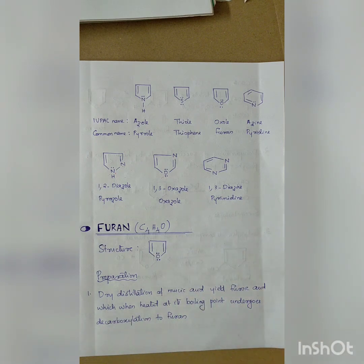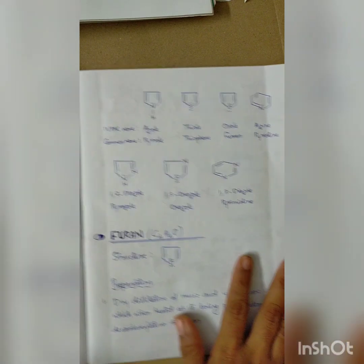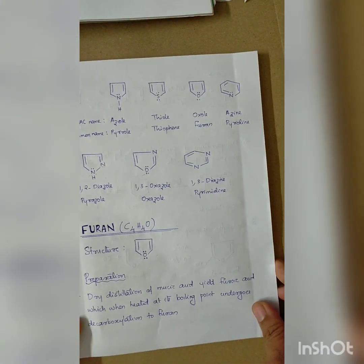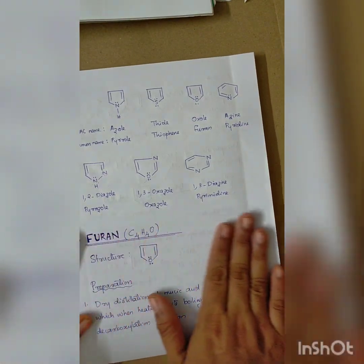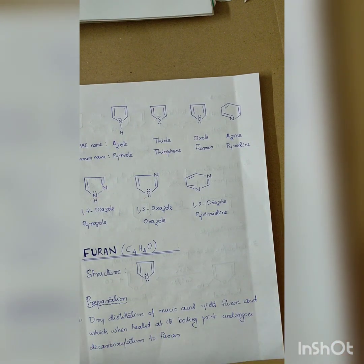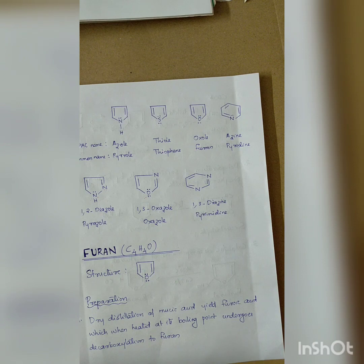The preparation of Furan can be done by 3 types of methods. The first method is dry distillation of mucic acid. In this process, mucic acid undergoes dry distillation to yield furoic acid.